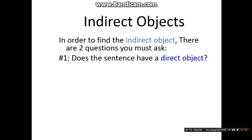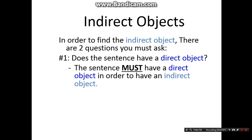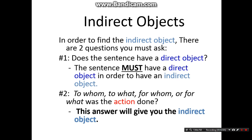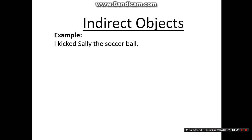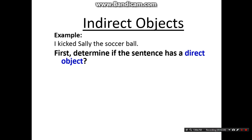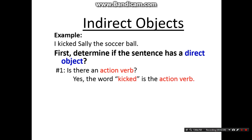You don't have to take notes on this slide, but to find the indirect object there are two questions you must ask. Number one: does the sentence have a direct object? You know how to figure that out from Monday and Tuesday's work — the sentence must have a direct object to have an indirect object. Number two: to whom, to what, for whom, or for what was the action done? That answer gives you the indirect object. Example: I kicked Sally the soccer ball. Step one — find the action verb. Write that down. Kicked is the action verb.